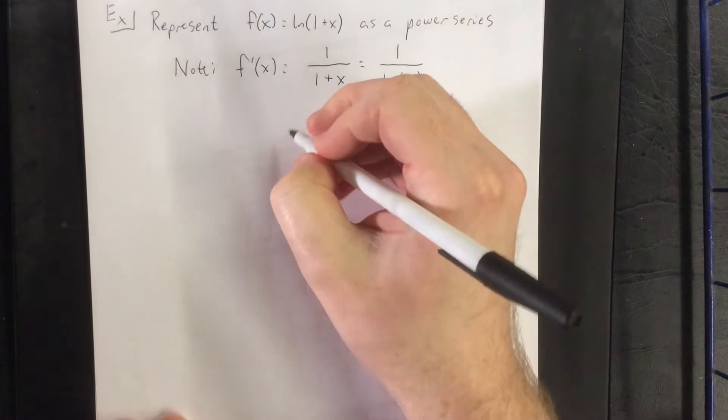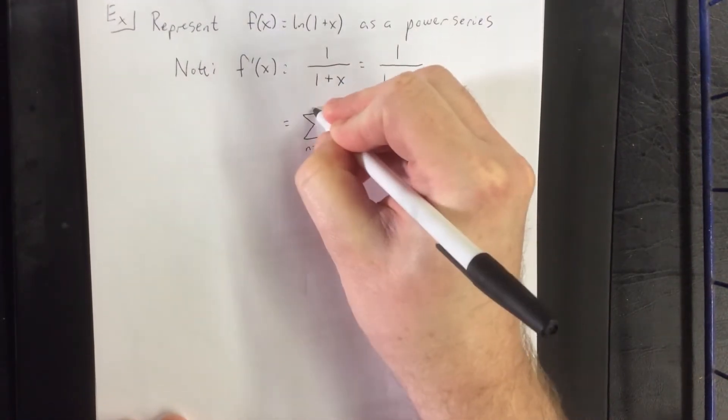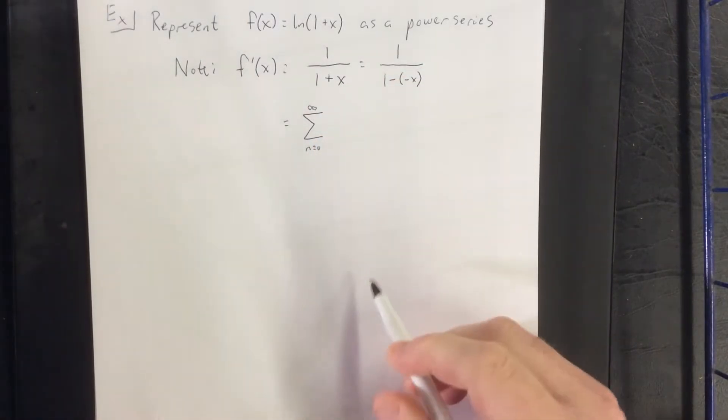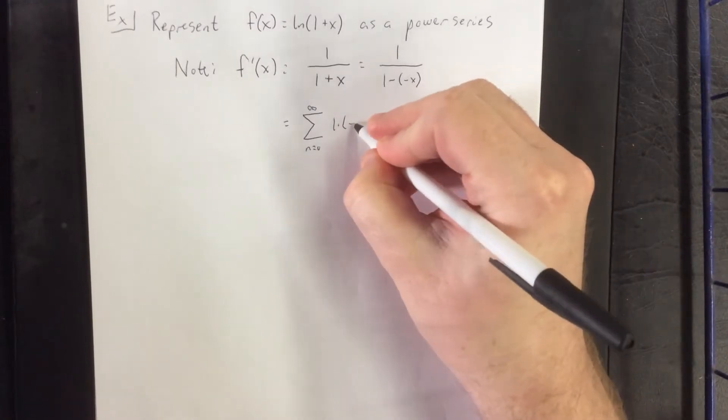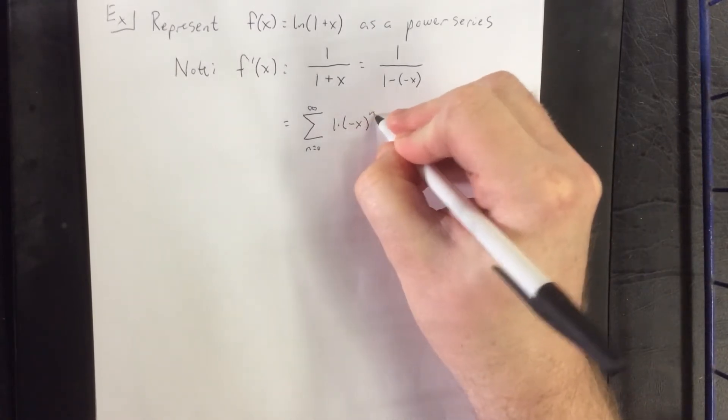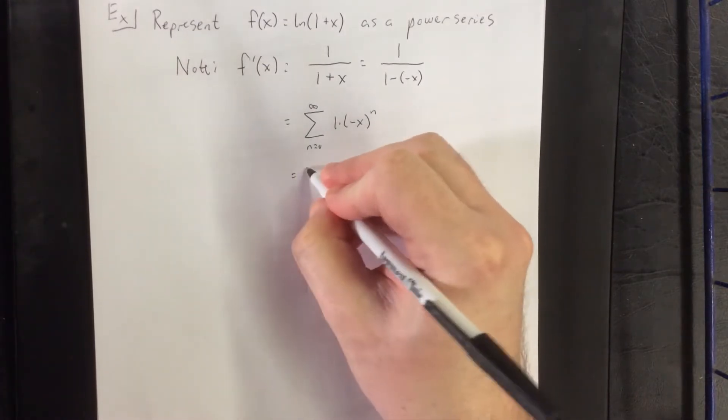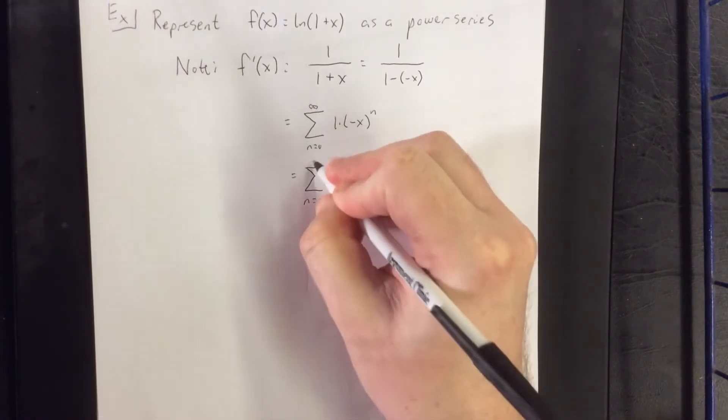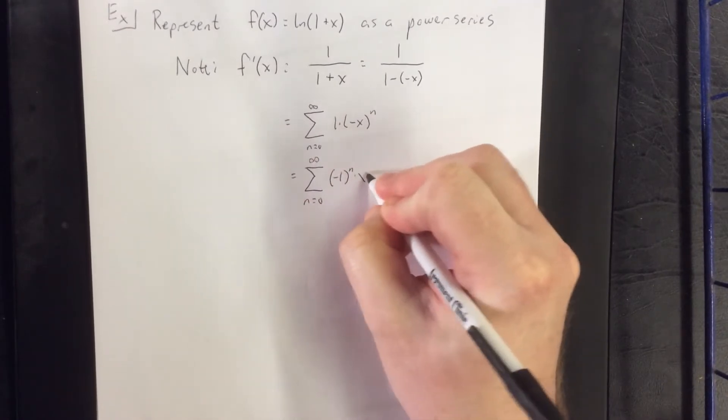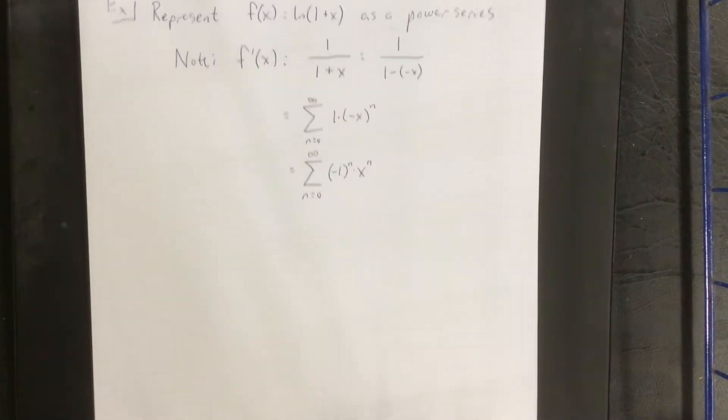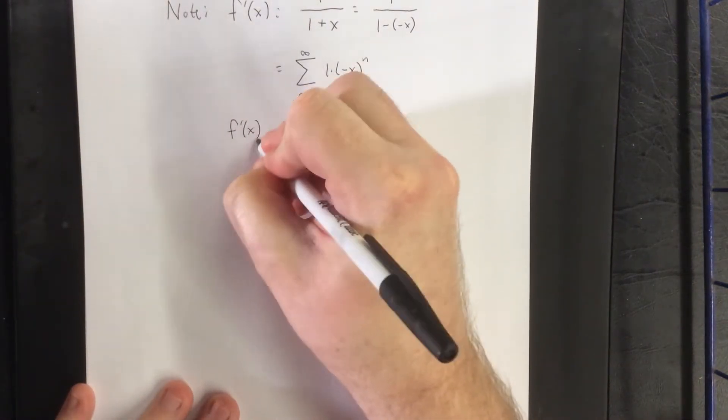This does have a power series representation. So I will take my first term times the thing being subtracted raised to the nth power. Now with that in mind we can make a small algebraic alteration to it which would be to express this as negative 1 to the nth power times x raised to the nth power. Now do bear in mind that this is what f prime of x is equal to.